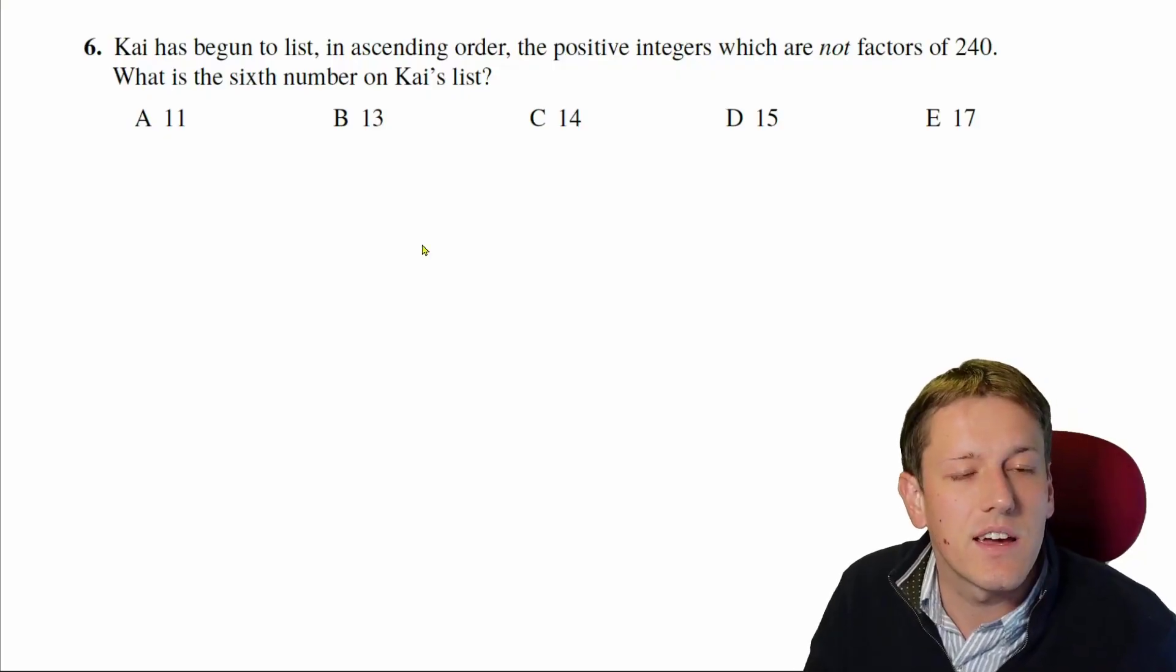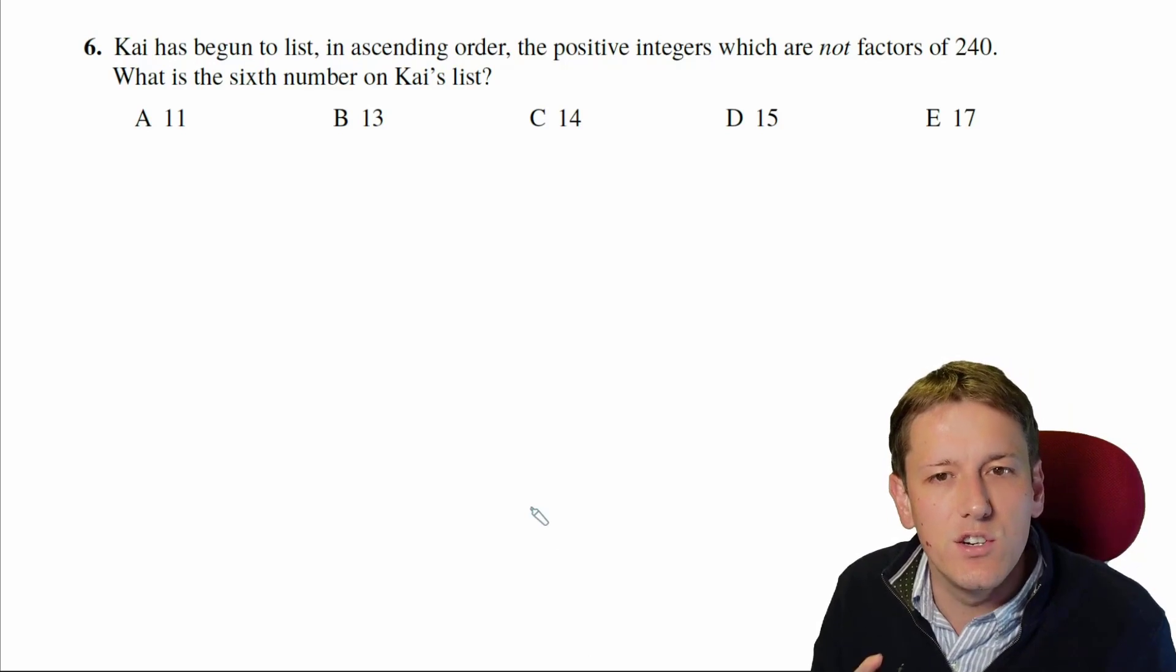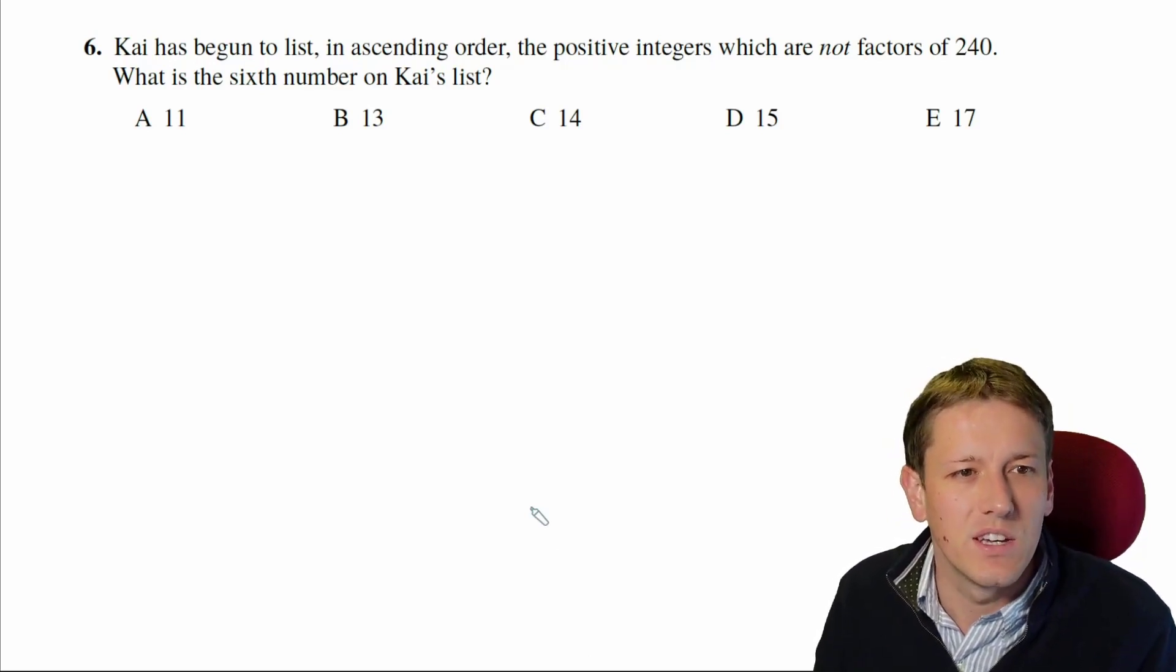Otherwise we will get on with the questions now. In question 6, Kai has begun to list in ascending order the positive integers that are not factors of 240, and we want to know what's the sixth number on Kai's list.